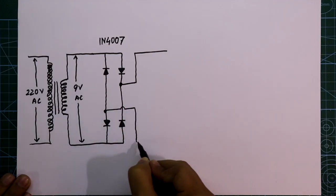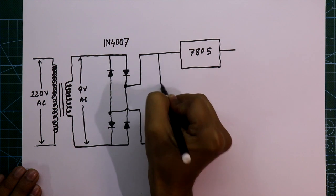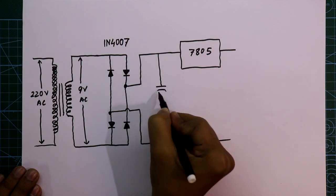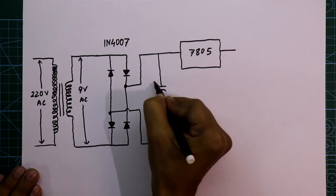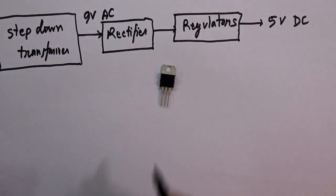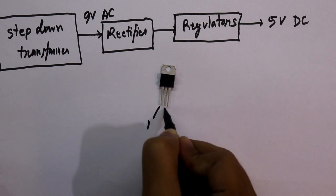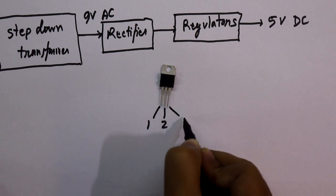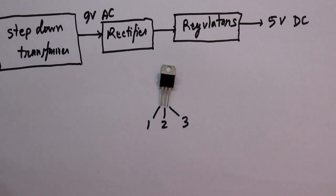After this we need a smoothing capacitor and the value of the capacitor is 1000 microfarad. This is the IC and it's pin number one, pin number two, and this is pin number three.